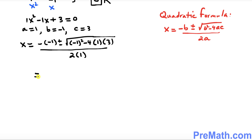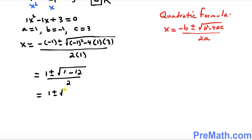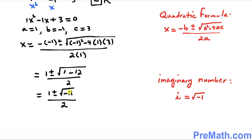Simplifying, that gives us 1 plus or minus the square root of 1 minus 12, divided by 2 — so that's 1 plus or minus the square root of negative 11, over 2. Now I want you to focus on this negative number under the radical.